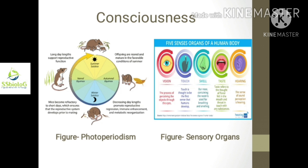Humans can also sense their environment through sense organs. Similarly, photoperiod affects reproduction in seasonal breeders. All of these responses are regulated by nervous and chemical mechanisms, so both chemical integrity and nervous integrity are necessary for all living organisms.